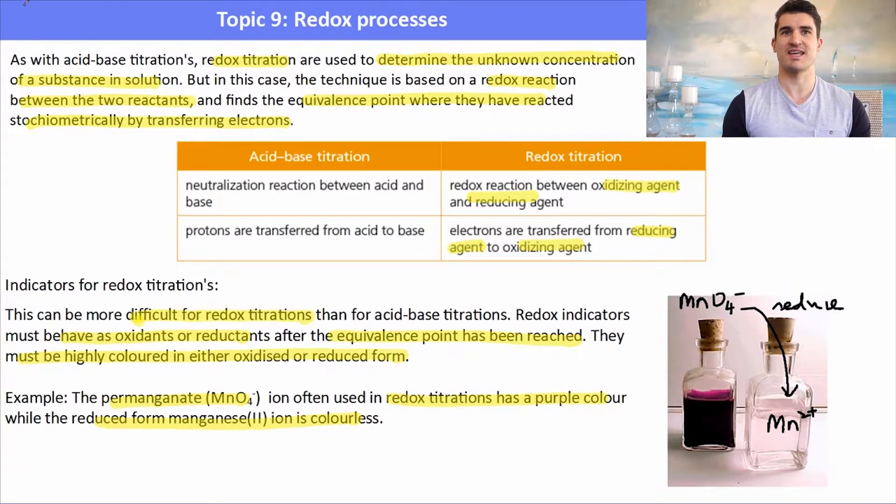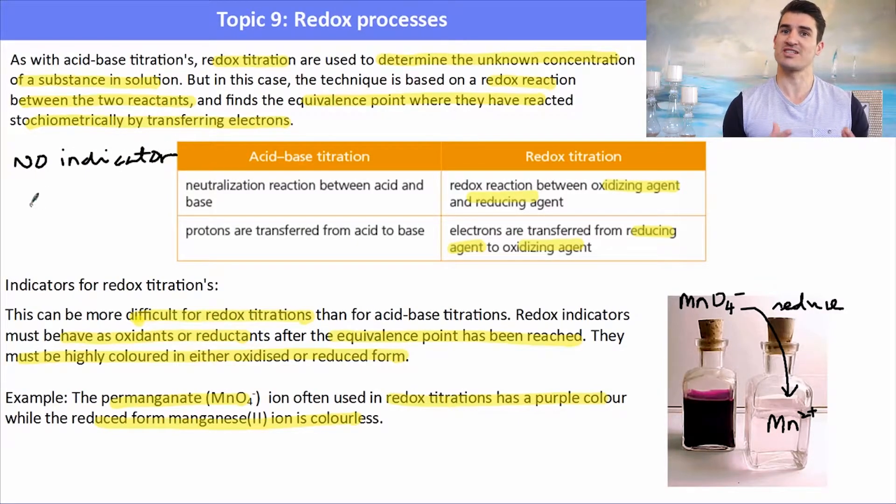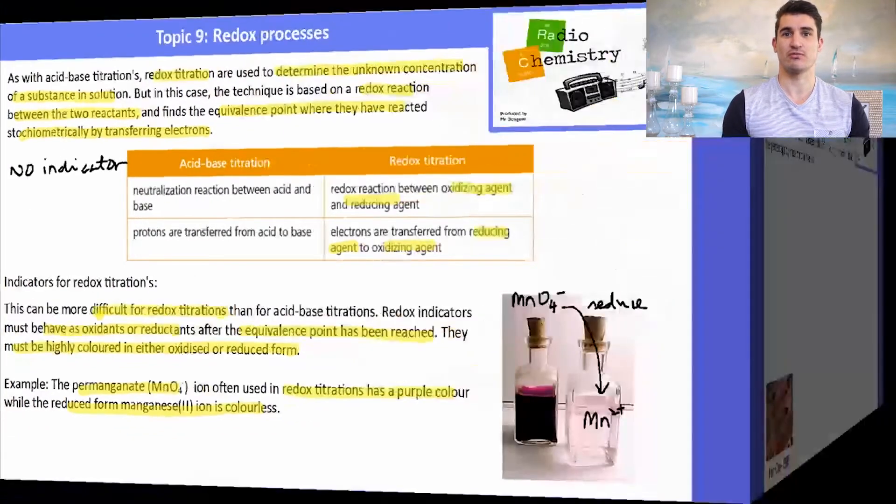However, sometimes an indicator that we might add might be starch, because starch can help us identify the presence of iodine. So starch is one that you might add during a redox process.